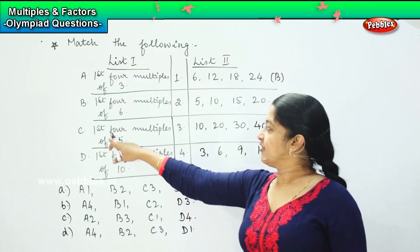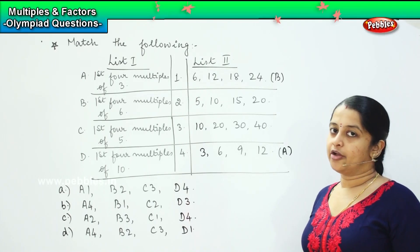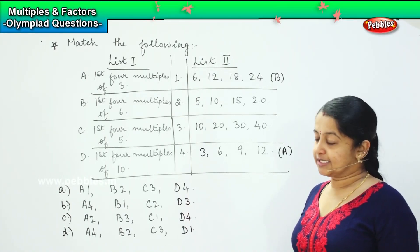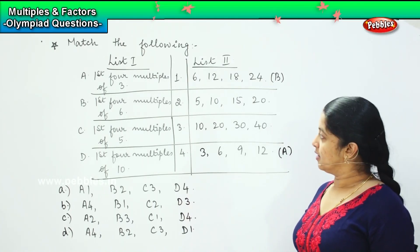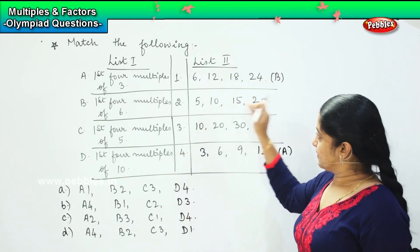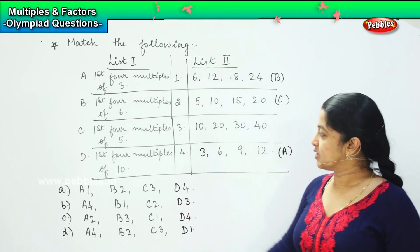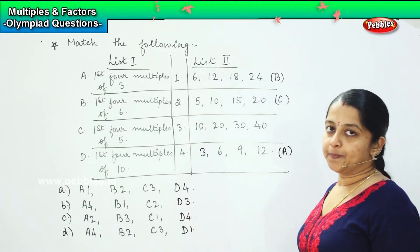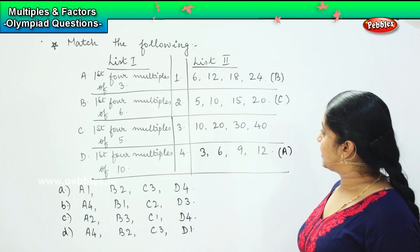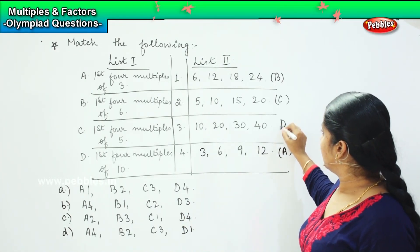Coming to the third one, first four multiples of five. Talking about the table of five, five ones are five, five twos are ten, five threes are fifteen, five fours are twenty, which is the second one. And the last one is first four multiples of ten, which is ten ones are ten, ten twos are twenty, ten threes are thirty, and ten fours are forty. That is the third one.